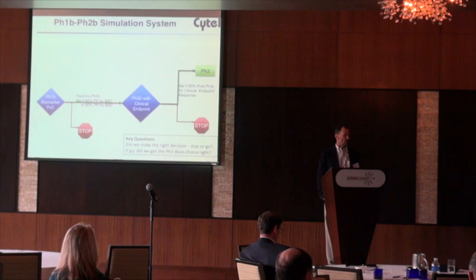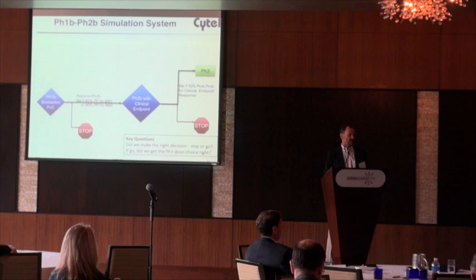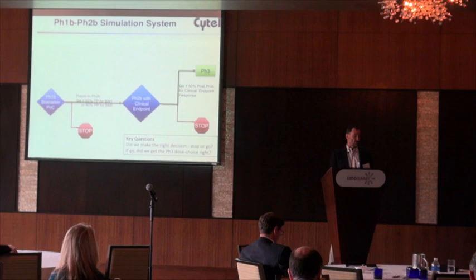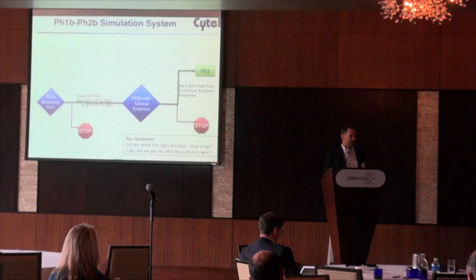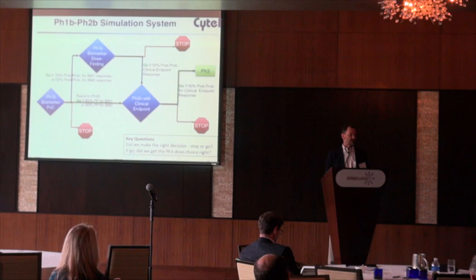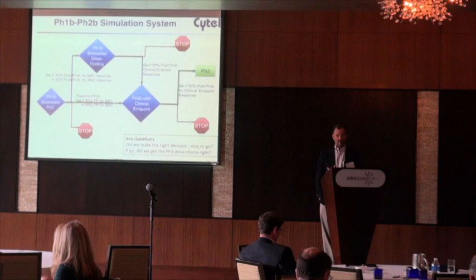Here is the schematic. One approach was to only do a biomarker proof of concept trial with a rapid-to-two-B criteria, then conduct the phase two trial with the clinical endpoint, followed by another criteria that had to be satisfied to go to phase three. The key questions were: did we make the right dose choice, and did we make the right choice of stopping or going? We also had another option of doing a biomarker dose finding trial and analyzing both biomarker trials together to better inform the design of the phase two trial.